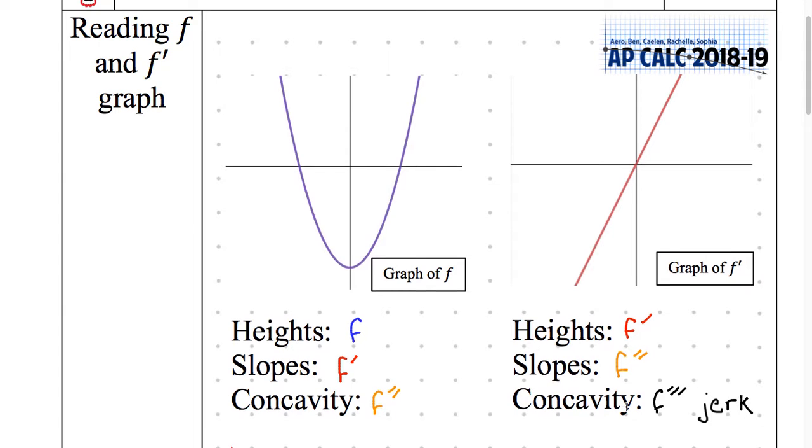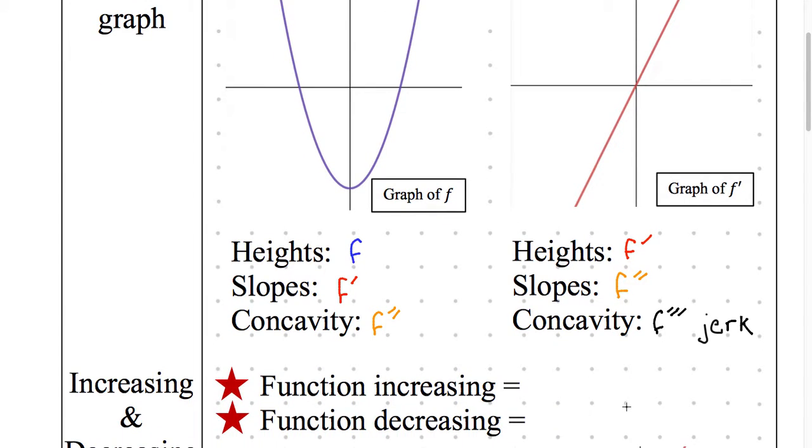You know why he's a jerk? Because I can't spell him? No, because you can't use concavity. That jerk ruined our concavity. Don't worry about concavity. It's a jerk.